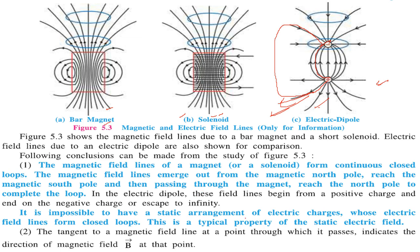The tangent to a magnetic field line at a point through which it is passing indicates the direction of magnetic field B at that point. You can take any tangent; this will show you the direction of magnetic field.